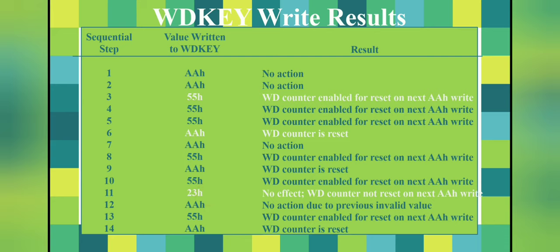Writing 0x55 then 0xAA will enable the reset and reset the counter to 0. In programming, note that these are protected system control registers in the core memory of the processor. You must unlock them before use and disable protection after. The code is: SysCtrlRegs.WDKEY = 0x55 to enable the reset, followed by SysCtrlRegs.WDKEY = 0xAA to set the counter to 0. Writing any other values will have no effect.